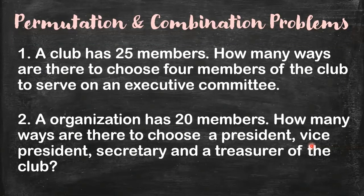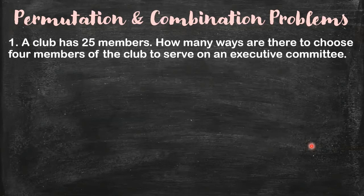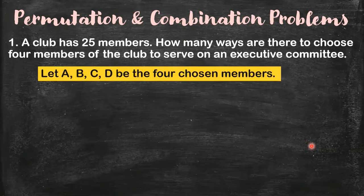Now, I want you to consider these two problems. Let's discuss which is a permutation problem and which is a combination problem. The first problem: a club has 25 members. How many ways are there to choose four members of the club to serve on an executive committee? Let's say A, B, C, D are the four chosen members.